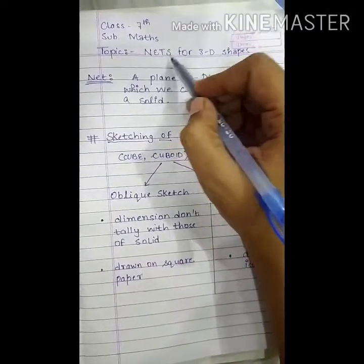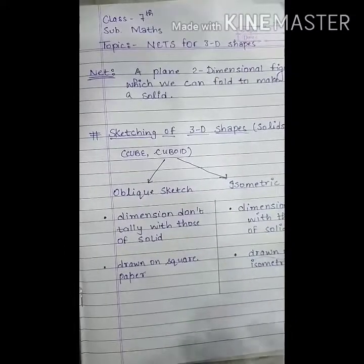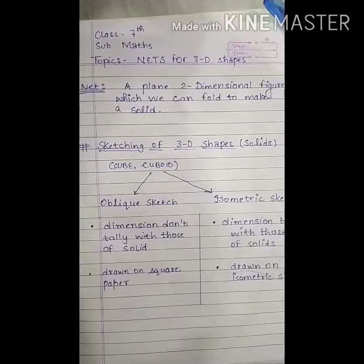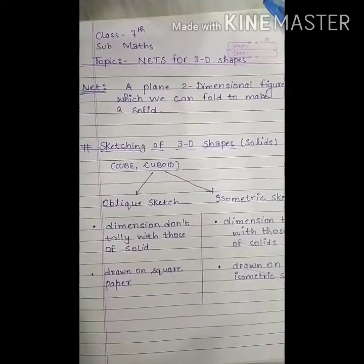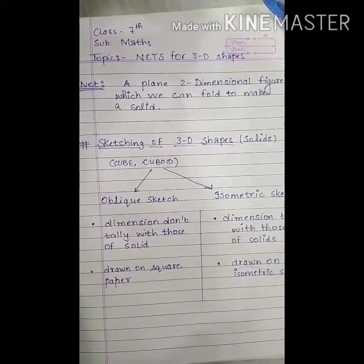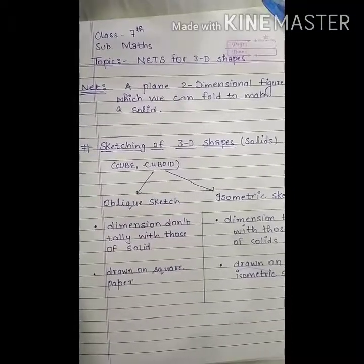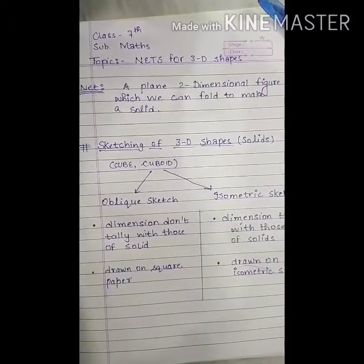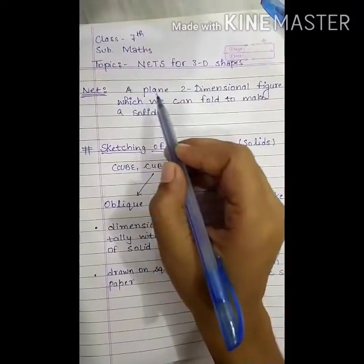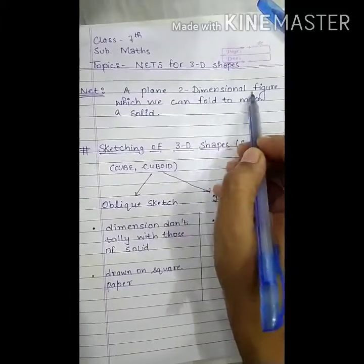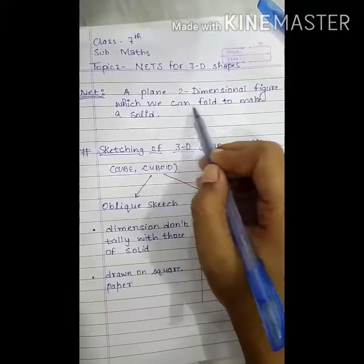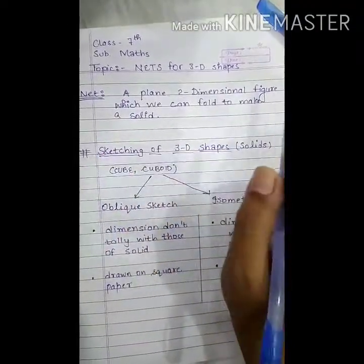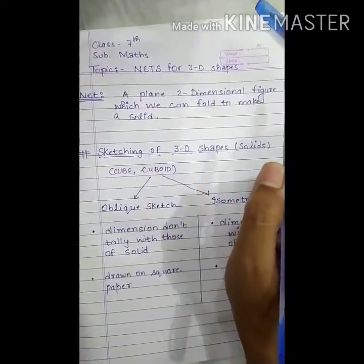So what is a net? Suppose you have a cube or cuboidal box. Now when you cut it from edges so as to lie flat on the table, this flat figure is called a net. So we can say that a plane 2-dimensional figure which we can fold to make a solid is called the net of a given solid.